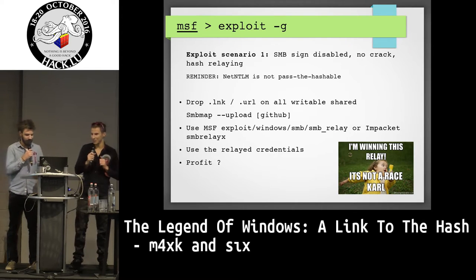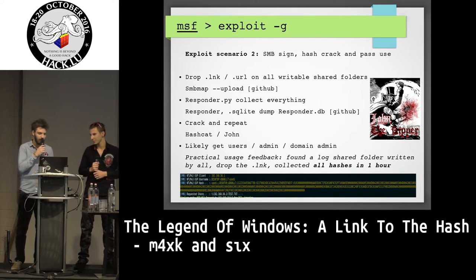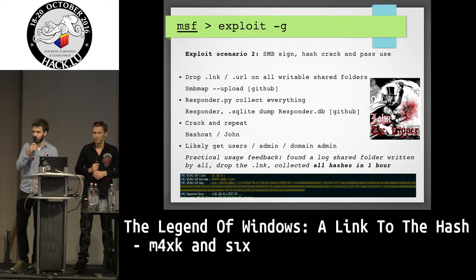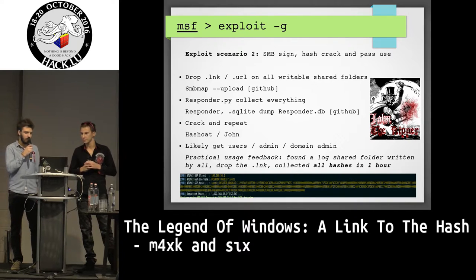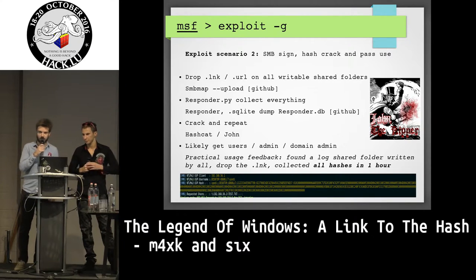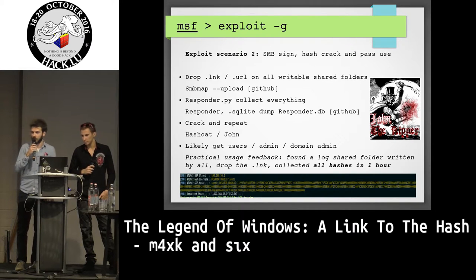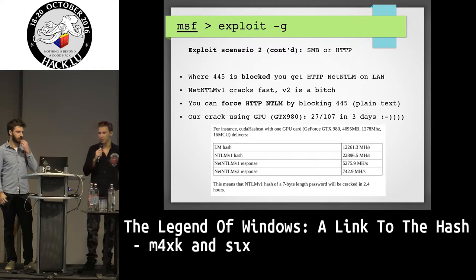For the second scenario — for those with signing enabled — we drop the LNK file in every writable folder we can find, then run Responder. All machines fetching this URL will send their hash to us. We can't relay it if it's signed, but as you can see on screen, Responder is catching the hash. Then you use standard tools like hashcat or John to crack the hash, and if your password policy is weak you'll likely get user, admin, or domain admin credentials.